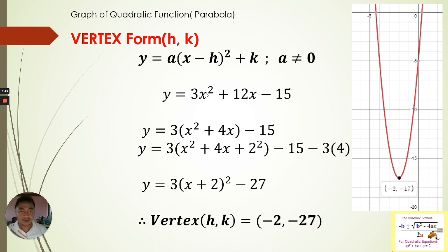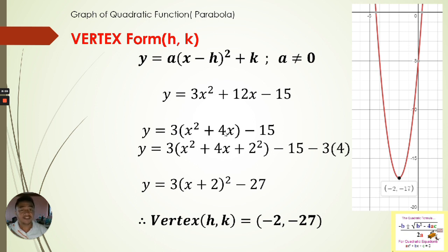So we have 3 times x² + 4x minus 15. To complete the square of the two terms inside the parentheses, we look at the second term's coefficient, 4. We divide 4 by 2 to get 2, then square it to get 4, which we add inside the parentheses.